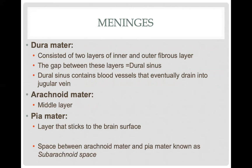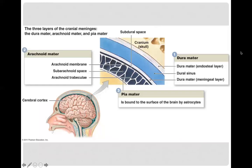The dura mater is the outermost lining of the meninges, closest to your skull. It consists of two very fibrous layers with a lot of protein fibers for protection. There is a gap between the inner and outer layer of dura mater called the dural sinus. The dural sinus is extremely important because it contains blood vessels that drain into the jugular vein, collecting deoxygenated blood from your brain and returning it to the heart for oxygenation.